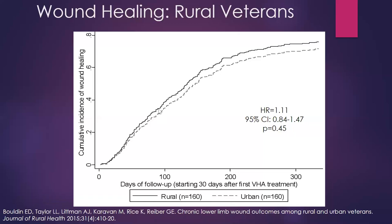The hazard ratio summarizes this difference over the whole curve. At any given time point — say day 100 — the hazard ratio for healing was 1.11, meaning rural veterans had about 10–11% higher incidence of wound healing compared to urban veterans. This hazard ratio averages across all the difference seen. It might be 1.02–1.05 early on and closer to 1.2 later, but on average rural veterans were about 10–11% more likely to have their wound healed. The p-value indicated no statistically significant difference between the two groups.